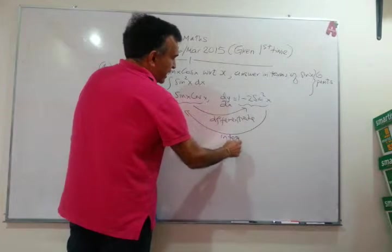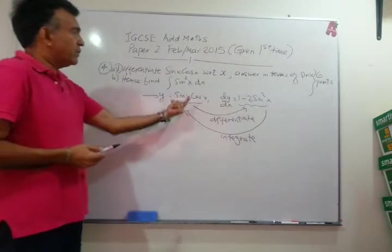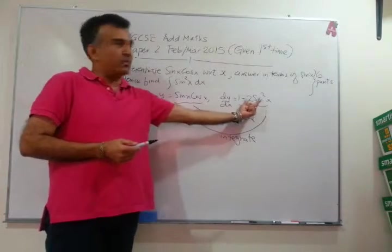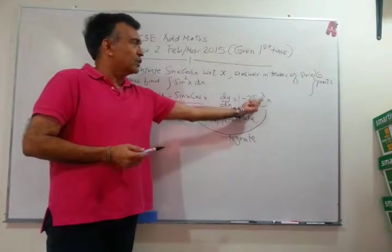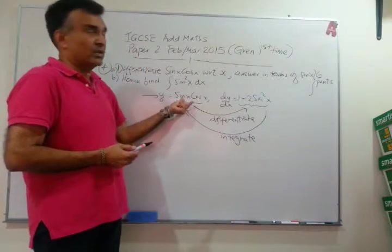So, let's write this. I'm going to erase this in a minute just to give you an idea. Differentiate sine x cos x plus x, you get 1 minus 2 sine squared x. So, when you integrate this, you must get back sine x cos x plus x.